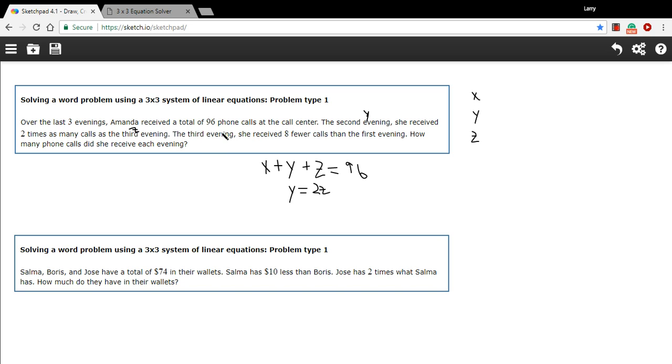Here's our next fact. It says the third evening, so that's Z, she received eight fewer calls than the first evening. Well, the first evening is X. Eight fewer than X would be X minus eight. So now we have three equations and three variables.